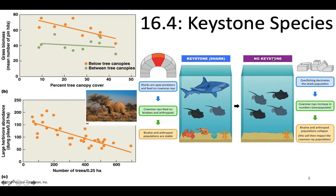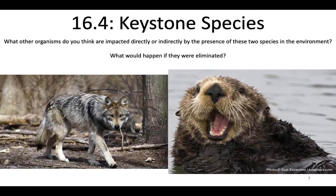Without that keystone predator, when the keystone's gone, it breaks down the structural integrity of the community. The cow nose ray populations increase, and their prey go almost entirely extinct because the cow nose rays are not being controlled. Other keystone species include wolves — you're going to watch a video about how important wolves are in Yellowstone — and otters, which we'll talk about in a second.